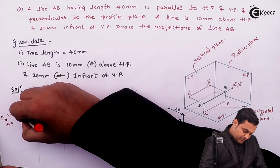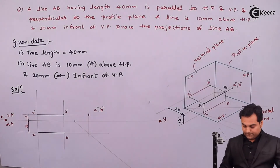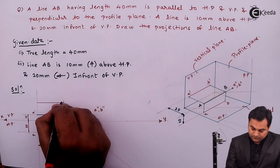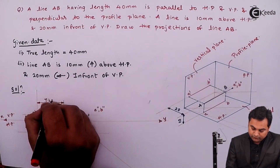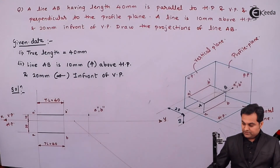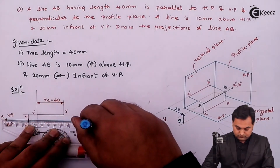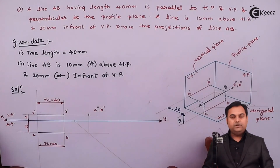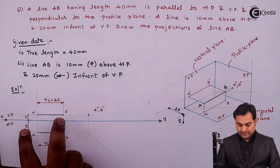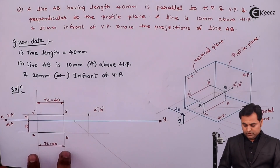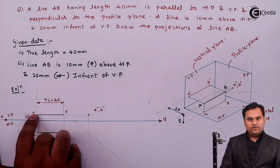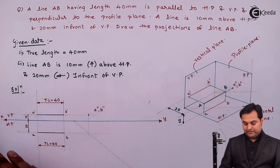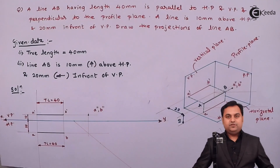The line is 10 mm above HP and 20 mm in front of VP. The true length is 40 mm, seen both in the front view and in the top view. In the front view it appears as a horizontal line of true length 40 mm, 10 mm above HP. In the top view it is a horizontal line of true length 40 mm, 20 mm in front of VP. In the side view it appears as a point. Since the line is not inclined, we get true length in both views. The problem is now complete.